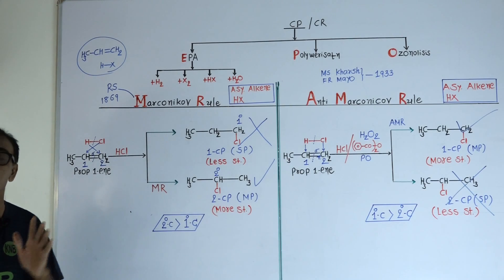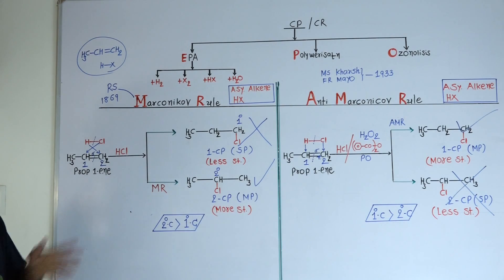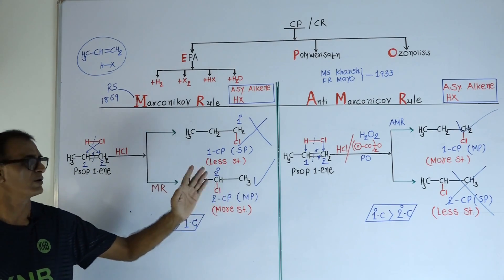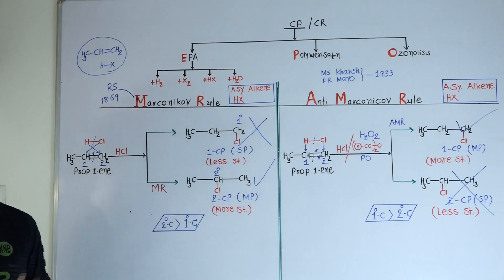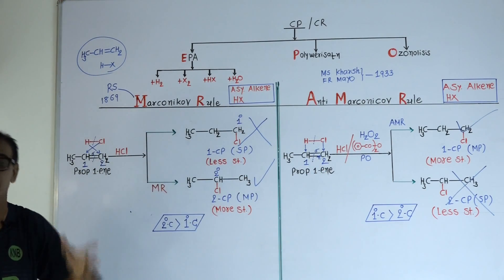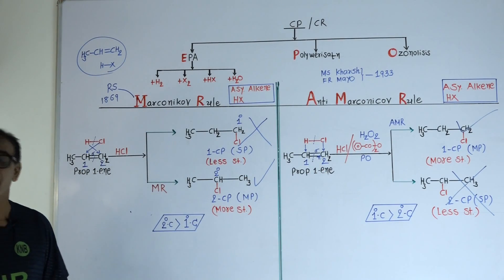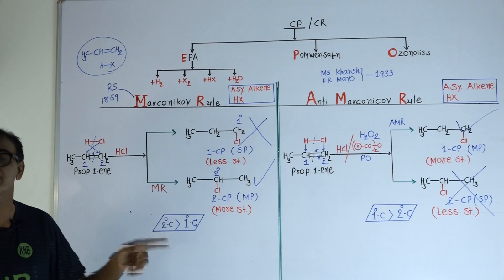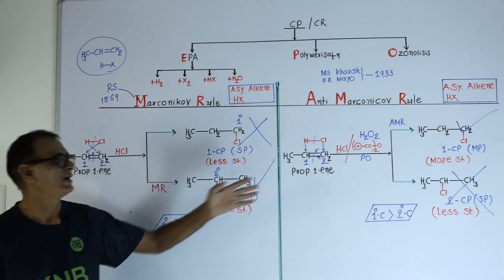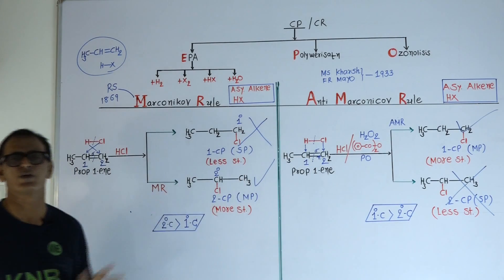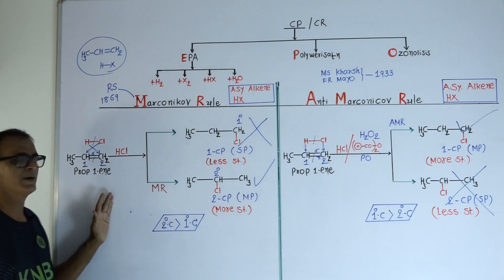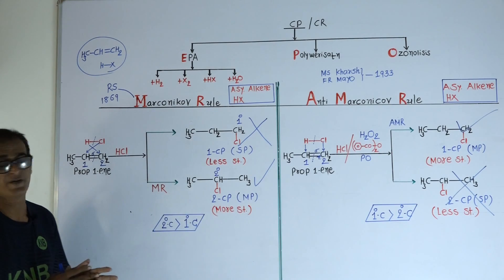This is a very important point. If no catalyst is used, 2-chloropropane is obtained. If a peroxide compound catalyst is used, 1-chloropropane is obtained. In the presence of peroxide compound catalyst, the stability of the primary carbon intermediate increases compared to secondary carbon, and that is why during Anti-Markovnikov rule we get the primary product, whereas under Markovnikov rule we get the secondary product.